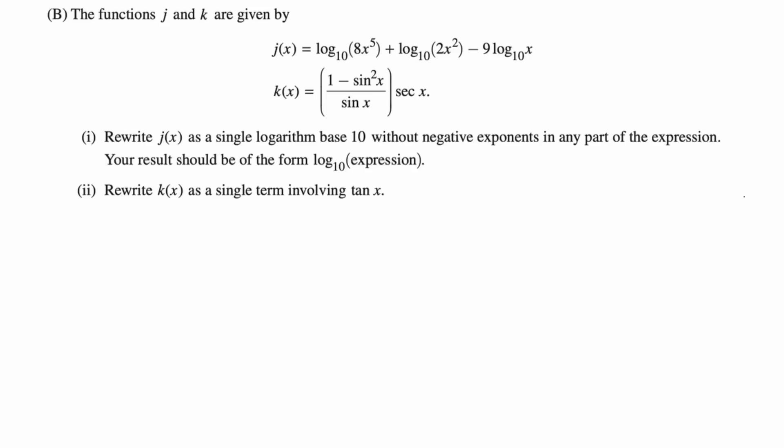Rewrite j as a single logarithm of base 10. No negative exponents in any part of the expression. And then your result should look like log base 10 of the expression. It's weird to me that they're writing base 10. But whatever, they are. Usually you just write log if the base is 10.